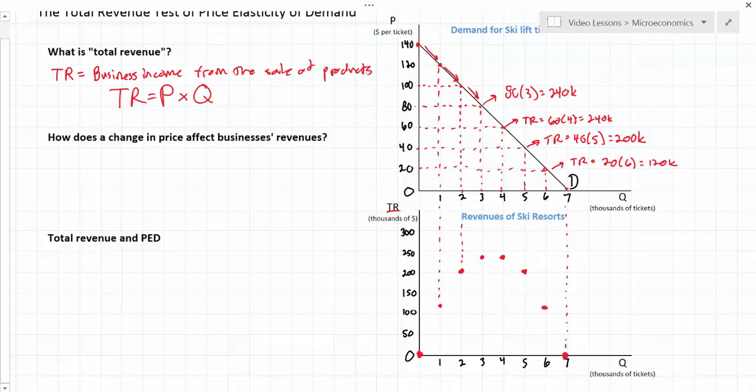I've now plotted all the possible levels of total revenue that firms can earn by charging a range of prices from $140 per lift ticket down to $0 per lift ticket. If I connect these dots then I will have what we call the total revenue curve. Let's do that now.